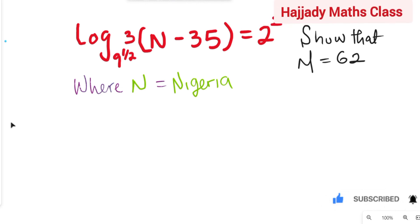Now, looking at the question we have here, we have that log 3(N - 35) equals 2 raised to power 2 into base of 9 raised to power half. Now, let's go.